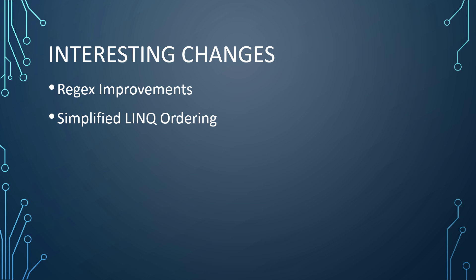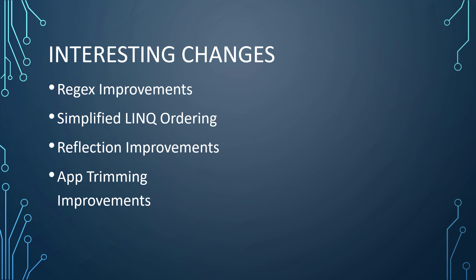Let's start with regular expression improvements. Some things did make regular expressions a little better in .NET 7. We have some simplified LINQ ordering — a little thing, but a nice feature improvement. We have improvements in reflection; I'm going to do a whole video on how it's made reflection better in .NET 7. And then there's app trimming.